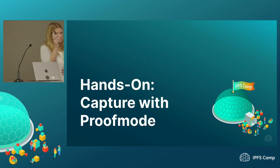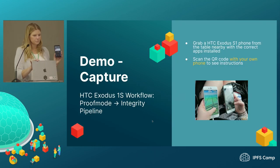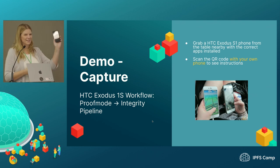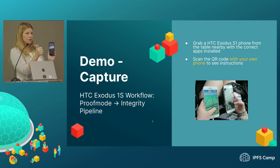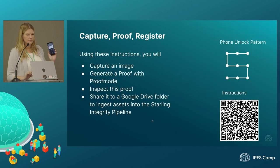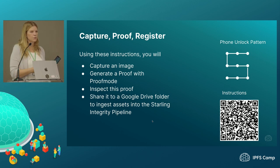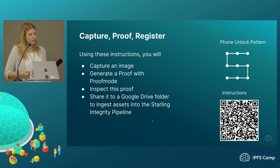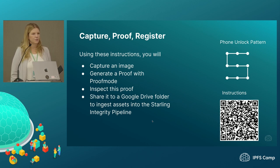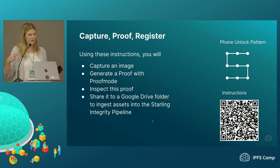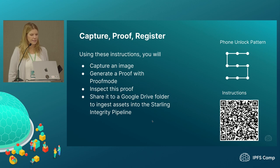It's hands-on time. Everybody pick up one of these phones that is laying on the table — you're going to double-fist your phones. You're going to have the HTC Exodus S1, and then you're going to have your own phone and I'm going to ask you to scan a QR code. Here's the HTC phone unlock pattern — draw an S. Then with your own phone, scan the instructions and it's going to walk you through a workflow. I want you to capture an image using the regular camera, generate a proof with Proof Mode, and then share it to a Google Drive folder to ingest assets into the Starling integrity pipeline.